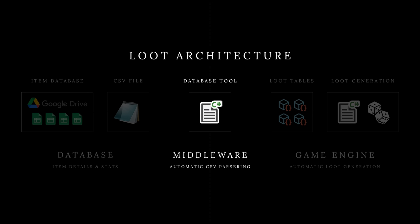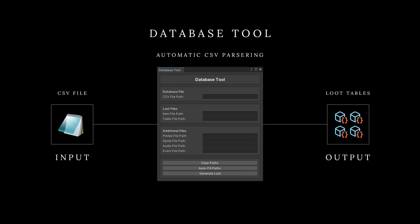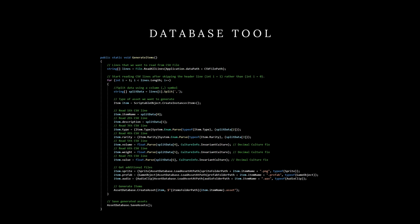The next phase is CSV parsing, and for this purpose Road to Vostok uses custom middleware called the database tool. This tool is specifically made for this project and is located inside the game engine. It reads the CSV file assigned to it and outputs compatible item files to the game engine. This parsing phase is fully automated — the tool finds all necessary files from the project and creates items directly into their correct loot tables for later use. Here's a simplified code snippet for the CSV parsing, very close to what I'm currently using.